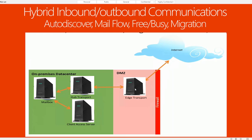If you don't have an edge transport server, your hub transport on-prem will go directly to the internet, and client access will directly go to the internet as well. If you have Exchange 2016 and a powerful server, you probably have just one server with all three roles installed. Your existing environment should have autodiscover working, mail flow working, and free/busy features working.